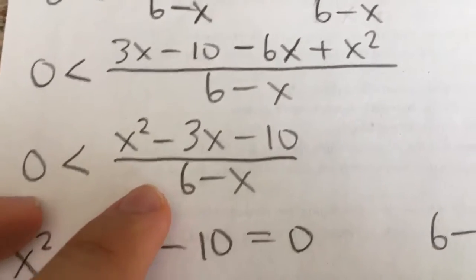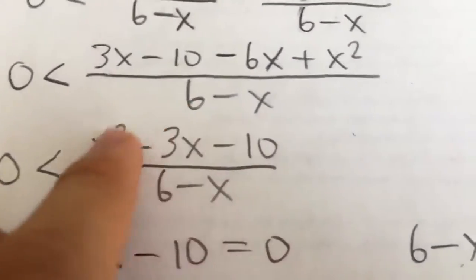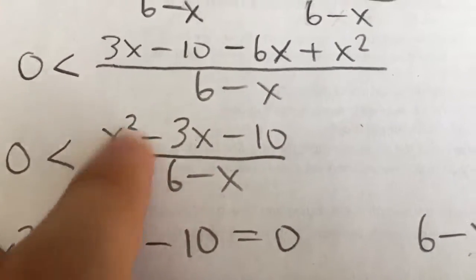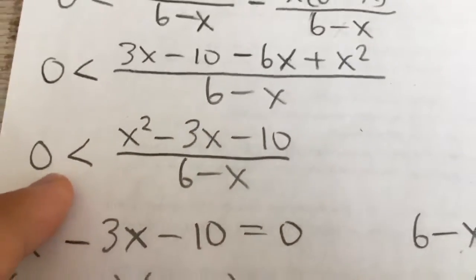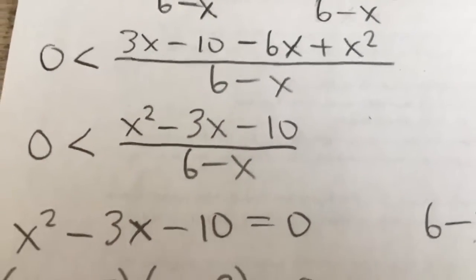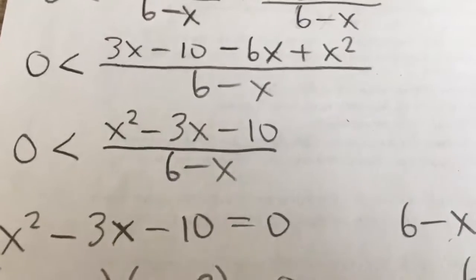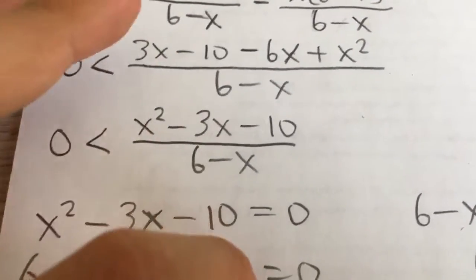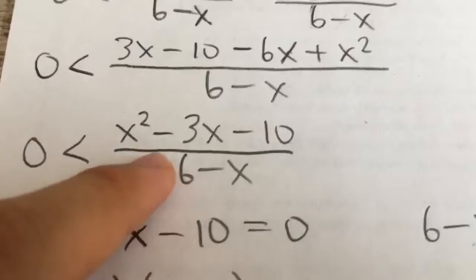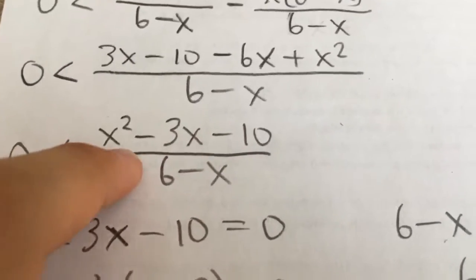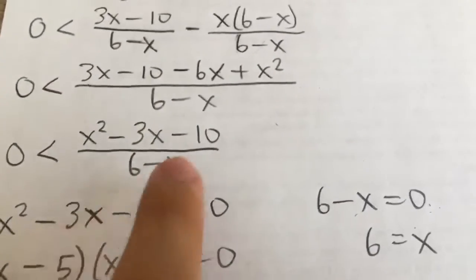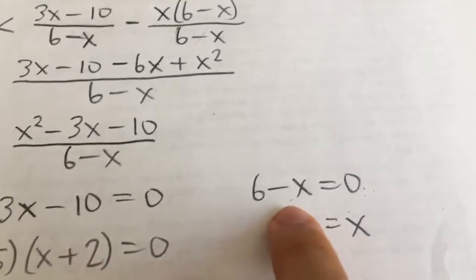And once we get to this step, we need to find the intervals where this fraction, or this rational expression, is positive, right? Greater than 0. And to do that, we need to know that the only way that it can change from being positive to negative or negative to positive is at the zeros of this expression, meaning where the numerator is equal to 0, or at the asymptotes, meaning where the denominator is equal to 0.